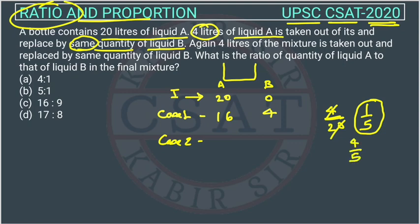So 4 by 5 part of 16 will remain and 4 by 5 part of 4 will remain. And 1 by 5 part of 16 is taken out and 1 by 5 part of 4 is taken out. So that will be equal to 4 kg. So what is remaining? The remaining is 16, 4 by 5 part of 16. Similarly, 4 by 5 part of 4 will remain in this vessel.